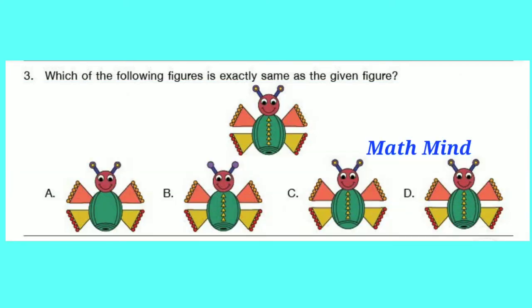Question number 3: Which of the following figures is exactly the same as the given figure? The correct option is D. Option A: middle beads are not drawn. Option B: two lines are not drawn. Option C: the lower circle is not drawn.